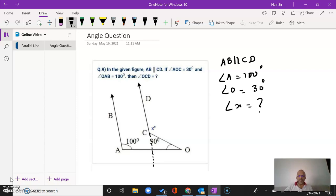I will extend this line. Now what does this become? AB is parallel to CD extended line. When I've got a parallel line and a transversal, I know that these are corresponding angles.